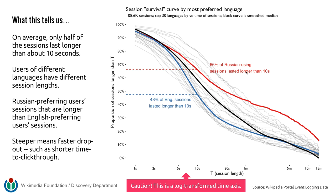The survival curve is sometimes called a Kaplan-Meier curve — that's when you're estimating it using a small dataset. Here, because we have so much data, we were able to estimate the survival curve directly from the data rather than using a particular statistic.